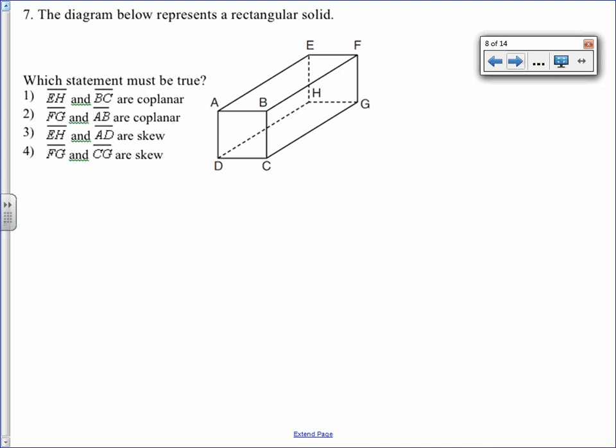Let's go through each choice. EH and BC. Coplanar means they could be contained in the same plane. Could BC and EH be contained in the same plane? Yes, if you take a plane and put it diagonally through, those would be on the same plane. Let's just go through the rest of the choices.